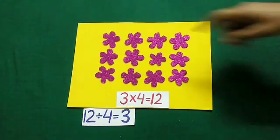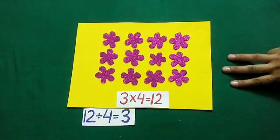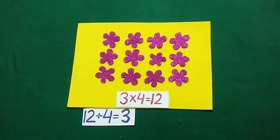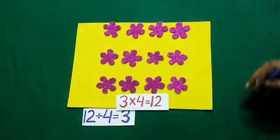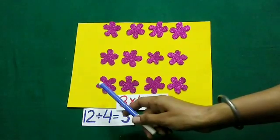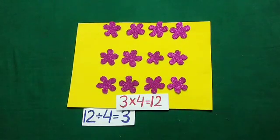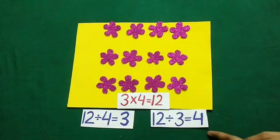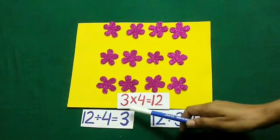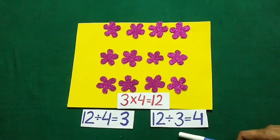Now, I want to divide these flowers in 3 equal groups. So we made 3 groups of these flowers and in each group we have 1, 2, 3, 4 flowers. It means 12 divided by 3 is equal to 4. In this way with the help of multiplication we have got the 2 facts of division.